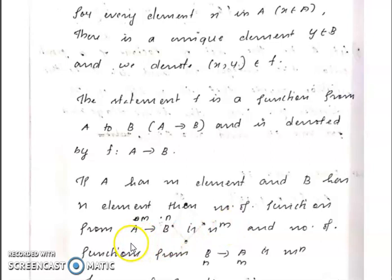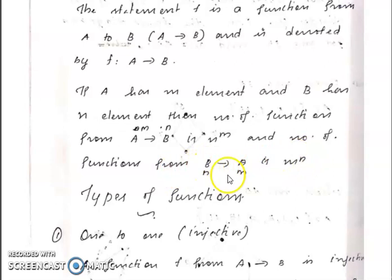Number of functions from A to B is N raised to M, because A has M elements and B has N elements. And if you take functions from B to A, the number of functions from B to A is M raised to N.